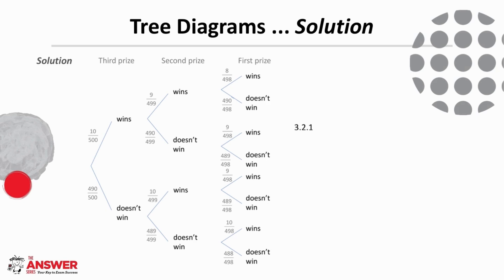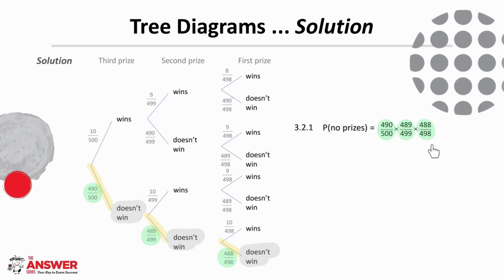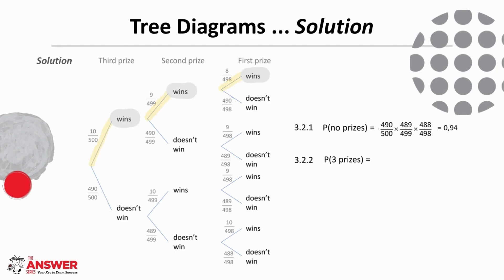Now that our tree diagram is complete we can move on to determining the probabilities. For 3.2.1, what is the probability that Zia doesn't win any prizes? We track along the tree diagram each time following the 'doesn't win' branch, and to find the probability we find the product of these probabilities along the pathway. For 3.2.2, what is the probability that Zia wins all three prizes? This time we track along the wins branches and find the product of these probabilities. We can see the chances here are so small that the probability rounds off to 0.00.